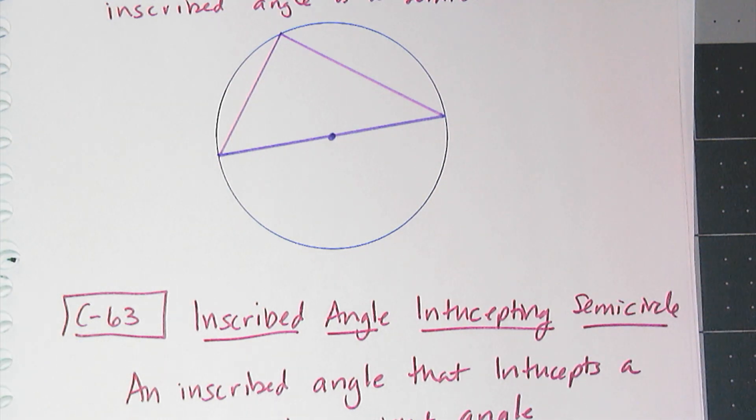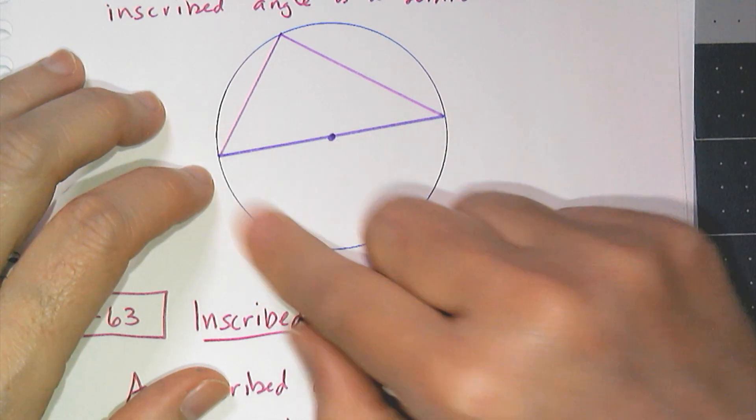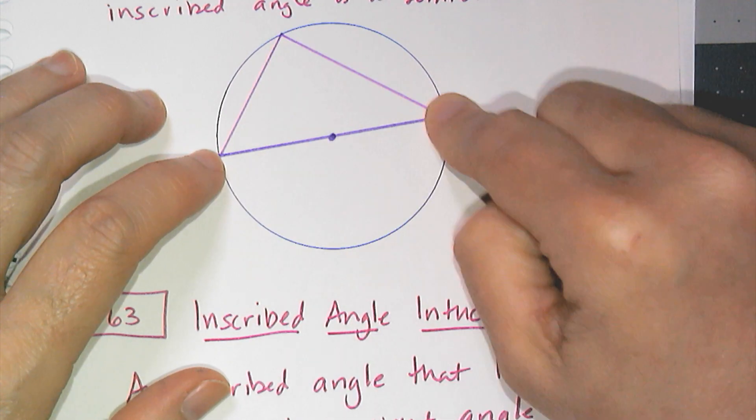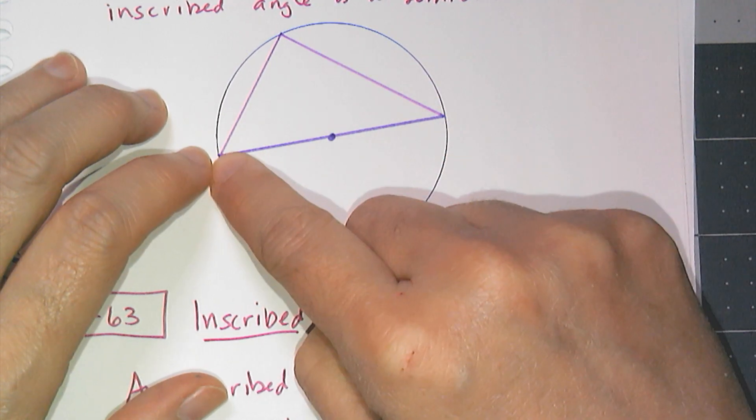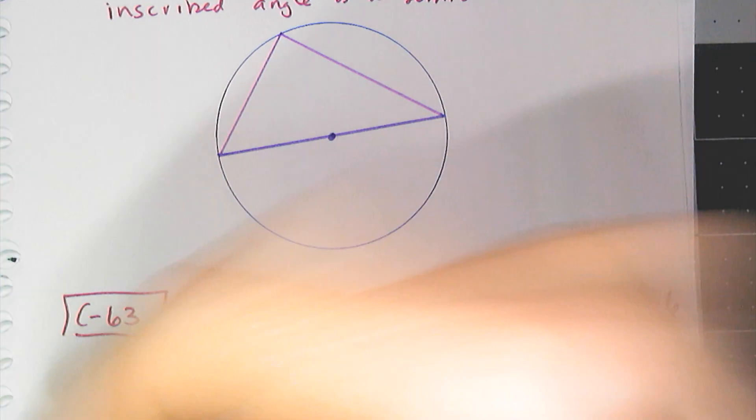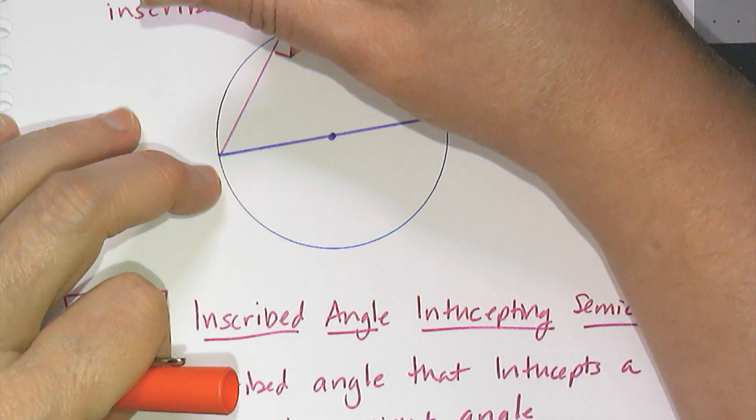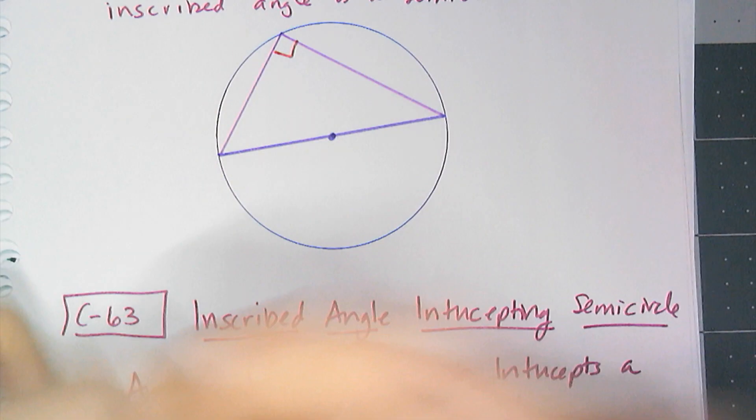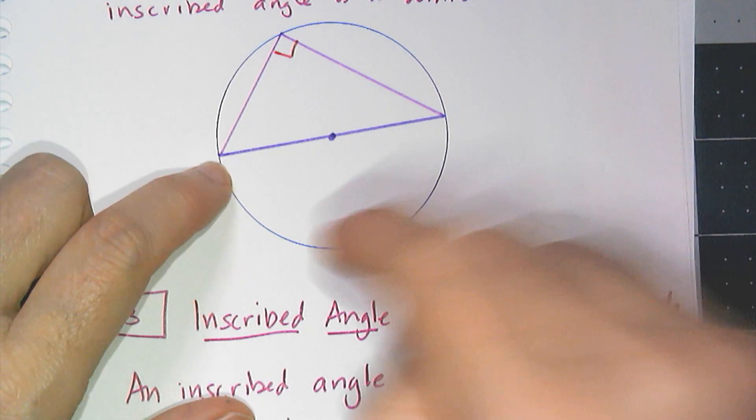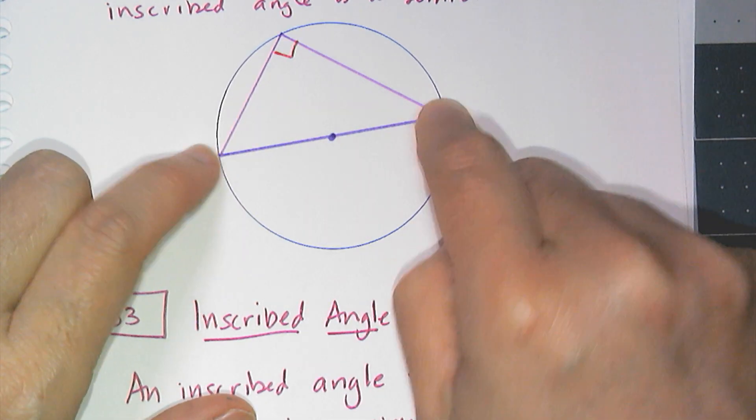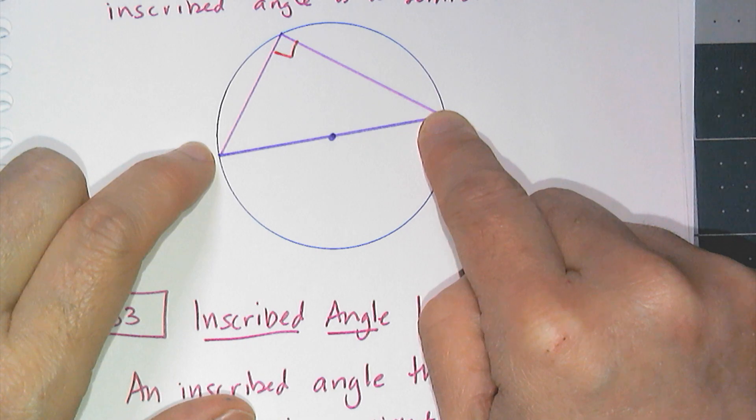And so I always remembered that this drawing here, if I had an angle that intercepted a semicircle, that that angle is a right angle. So my brain remembers this picture, and this picture helps me remember that this inscribed angle is half of the intercepted arc measure.